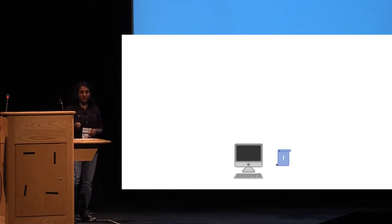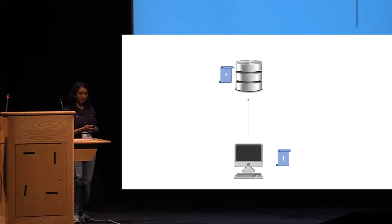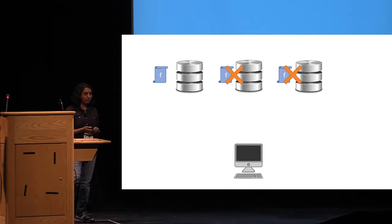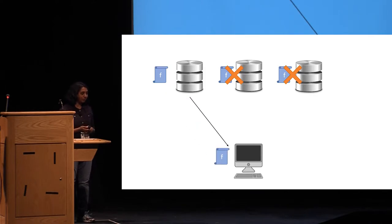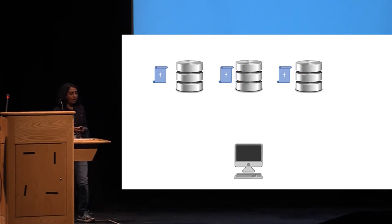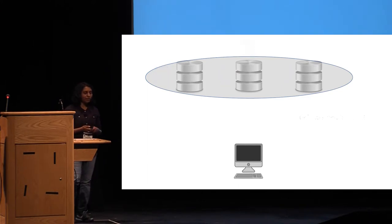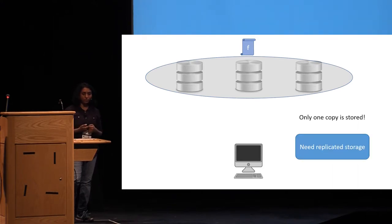Let's begin with a motivating example. We have a client who would like to outsource the storage of a file to a server, and for reasons of availability, would like to store different copies of the file in multiple locations so that if some servers crash and some copies are unavailable, the client can still retrieve the original file. The problem, however, is that if the servers are corrupt and collude to save costs of space, they can actually only store one copy of the file.